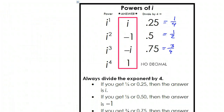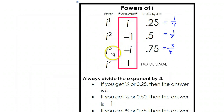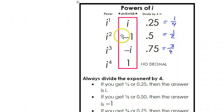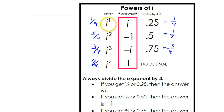This technique relies on you memorizing the chart. You just have to memorize i to the 1st, 2nd, 3rd, and 4th power, which are i, negative 1, negative i, and 1. This part goes in order: 1 fourth, 1 half, 3 fourths. You could think of it as 1 fourth, 2 fourths, 3 fourths, and 4 fourths — where 2 fourths is 1 half and 4 fourths is 1. The values get bigger as we go.